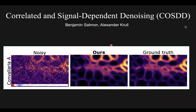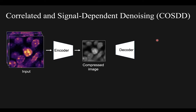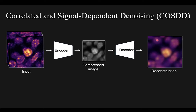This led to the development of Correlated and Signal Dependent Denoising, or COSD — Ben's project. This method requires only single unpaired noisy images to train and can handle spatially correlated noise when the correlations are in a row or vertical column direction. The training process is different from previous methods: instead of predicting a target image from an input image, COSD is trained to encode an image into a compressed representation and then decode it back into a reconstruction of the original input using two deep neural networks.